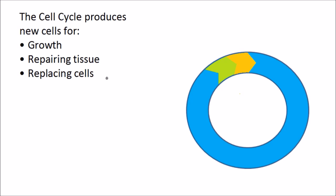Skin is a good example. We're constantly losing skin cells and they need to be replaced all the time, and the cell cycle is made up of three parts.